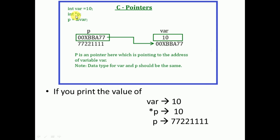After this, we declare one pointer variable. We saw that whenever you declare a pointer variable, you precede the pointer variable name with a star. So we write int *p — this p is a pointer variable which can hold the address of another variable. We initialize it as p = &var. If we just write var, the value 10 is assigned to p. But since p is a pointer variable, we must assign an address, so we write &var to fetch the address of the variable var.